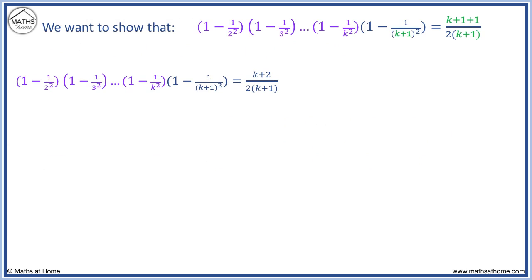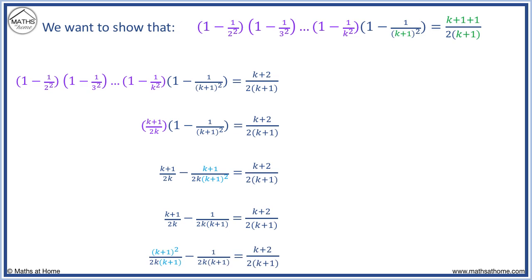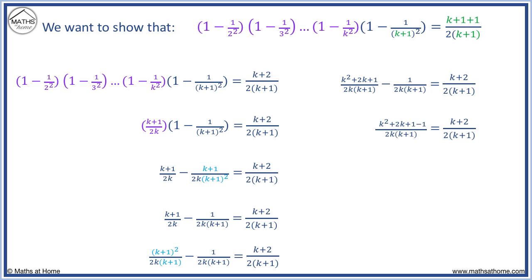We substitute the purple part with our assumption from step 2, then expand the brackets. We cancel the k plus 1 terms in blue, then multiply the first term by k plus 1 in the numerator and denominator to obtain common denominators. Expanding the bracket on top of the first fraction and writing as one fraction, we simplify the numerator, then factor out k from the numerator to cancel with the k on the bottom, leaving us with the desired result.